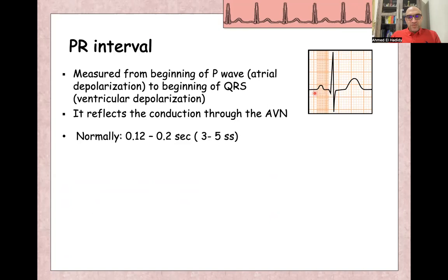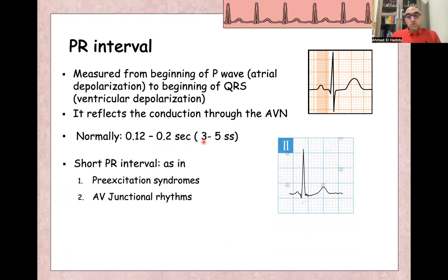Normally, it's from three to five small squares, which equals 0.12 till 0.2 seconds. And it can be short PR interval, less than three small squares, like in pre-excitation syndromes, like in Wolff-Parkinson-White syndrome, or in junctional rhythm.